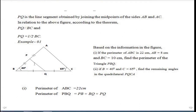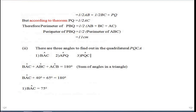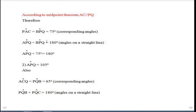According to the midpoint theorem, AC is parallel to PQ. Therefore, angle PAC equals angle BPQ. Angles APQ and BPQ are angles on a straight line, therefore angle APQ plus angle BPQ equals 180 degrees. Since angle BPQ equals 75 degrees, angle APQ can be obtained as 105 degrees.